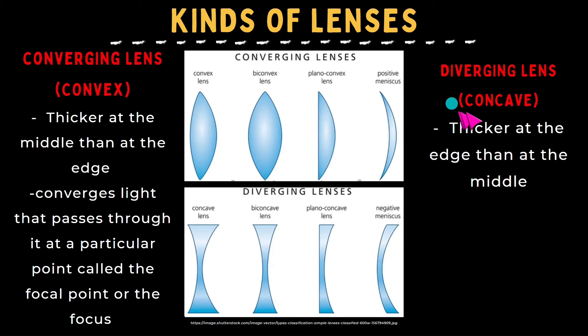Next, when we say diverging lens, it is concave and it is thicker at the edge. Here, the edge is thicker than at the middle.